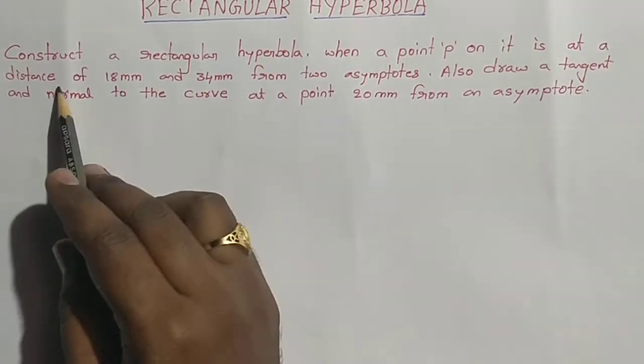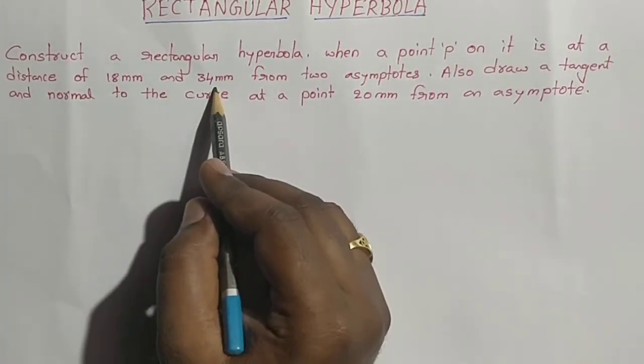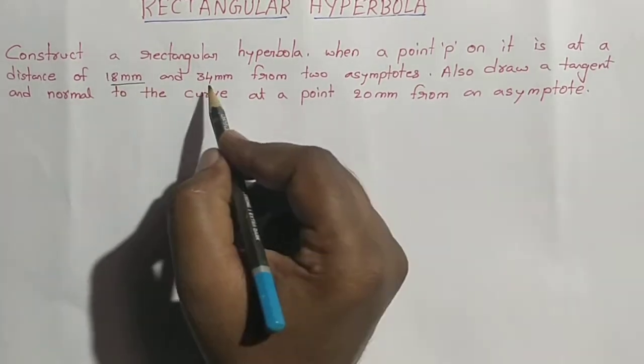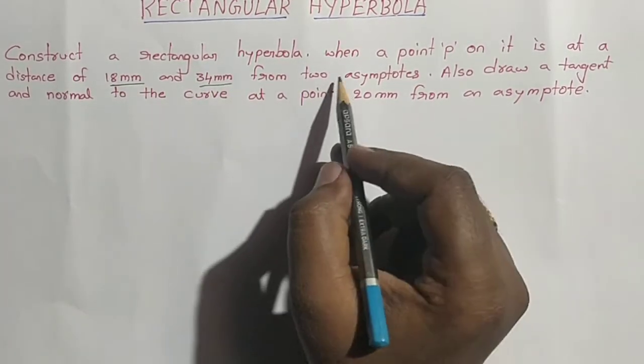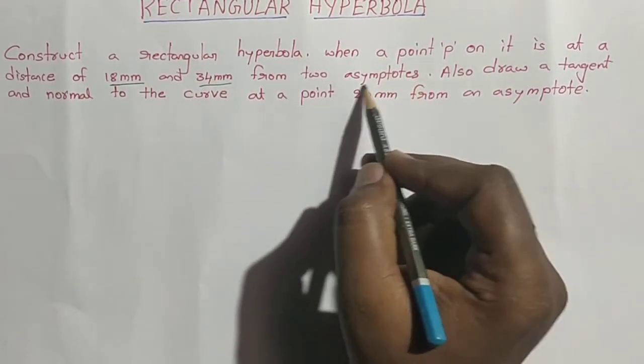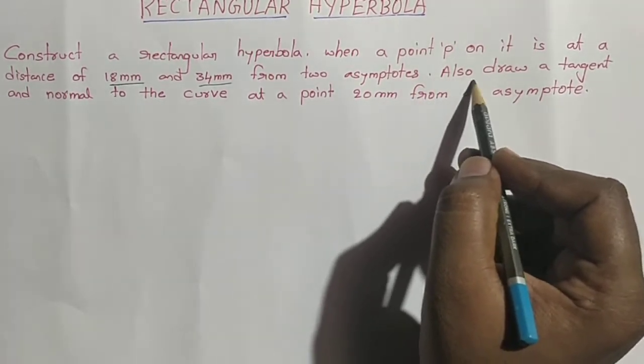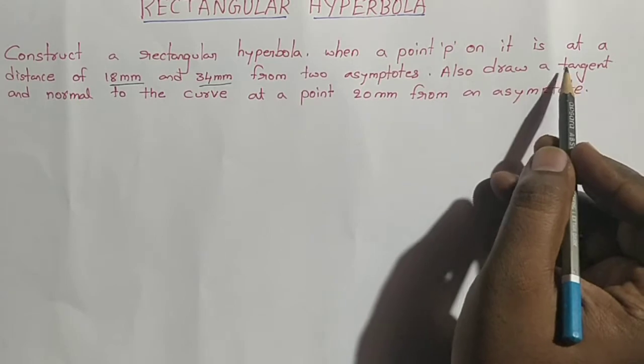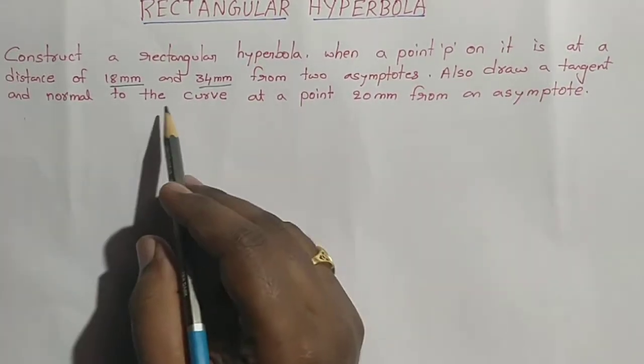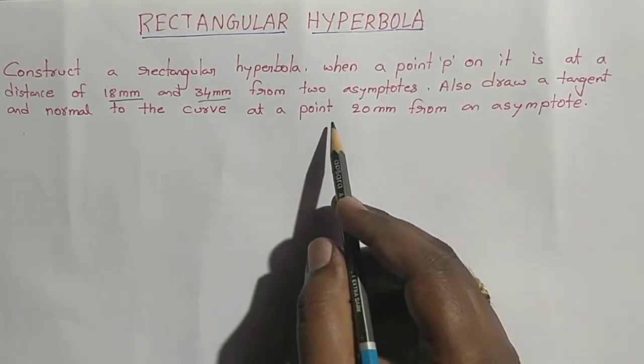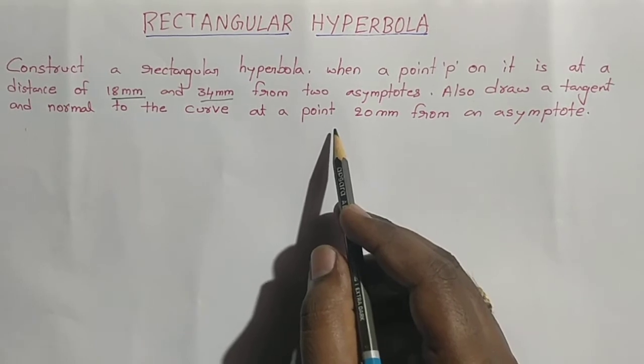Asymptotes are nothing but the x-axis and y-axis. Also draw a tangent and normal to the curve at a point 20mm from an asymptote. First we need to fix the drawing board with paper on the work surface.